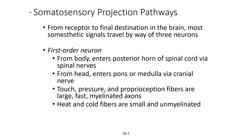I'm going to start with somatosensory projection pathways. A projection pathway is simply the path that the neurons take from the receptor to the final destination in the brain. Most of these signals, called somesthetic signals, travel by way of three neurons — called first, second, and third order neurons — and most of these projection pathways share this common three-neuron structure.